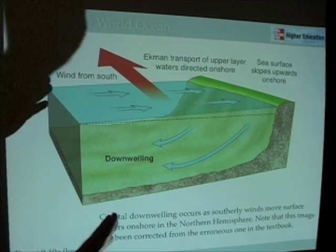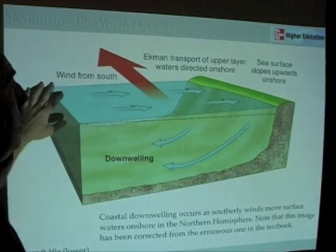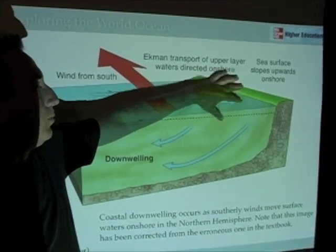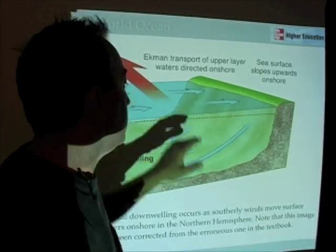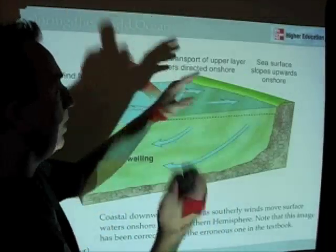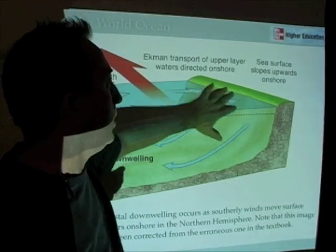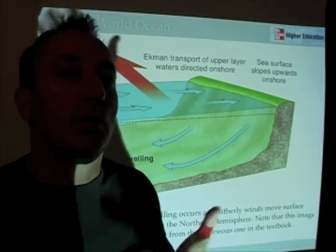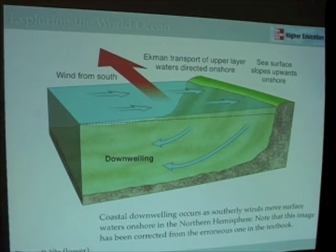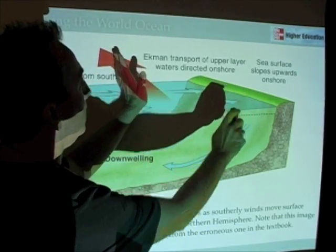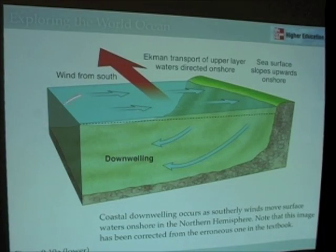Downwelling is sort of the opposite. Here we have a wind from the south, and 90 degrees to the right of the wind is towards the east along the coast of California, so we're piling up water on the coast. That piling up of water creates downwelling. Downwelling isn't as intense as upwelling, but it can be an important process — it shuts down biological productivity by pushing surface waters deeper, reducing productivity along the coast. Ekman Transport directs waters onshore, creating a slope of water upwards onshore and moving surface waters deeper.